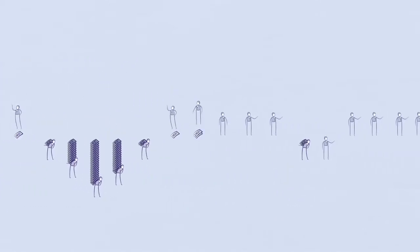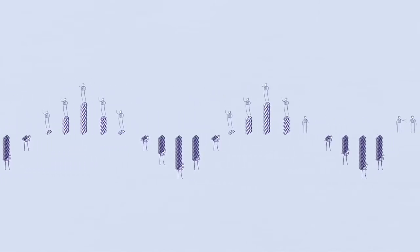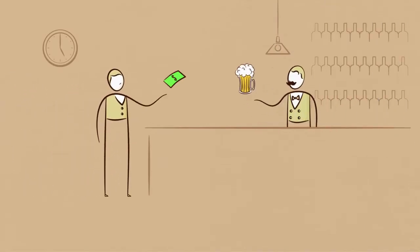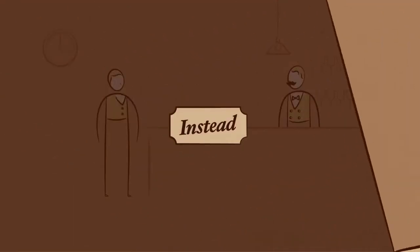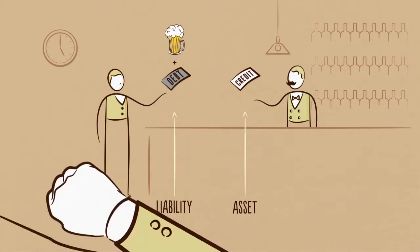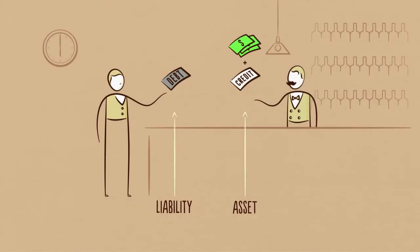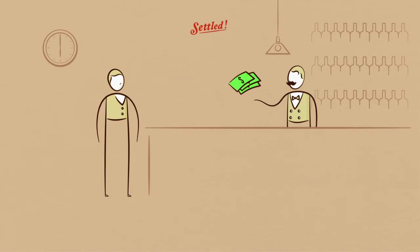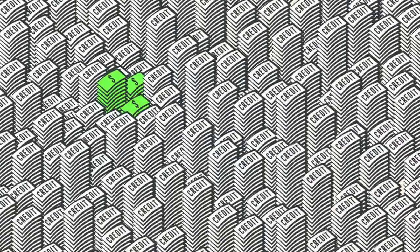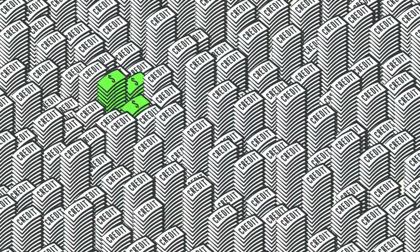Understanding credit is so important because it sets into motion a mechanical, predictable series of events that will happen in the future. This makes credit different from money. Money is what you settle transactions with. When you buy a beer from a bartender with cash, the transaction is settled immediately. But when you buy a beer with credit, it's like starting a bar tab — you're saying you promise to pay in the future. Together, you and the bartender create an asset and a liability out of thin air. It's not until you pay the bar tab later that the asset and the liability disappear, the debt goes away, and the transaction is settled. The total amount of credit in the United States is about $50 trillion, and the total amount of money is only about $3 trillion.